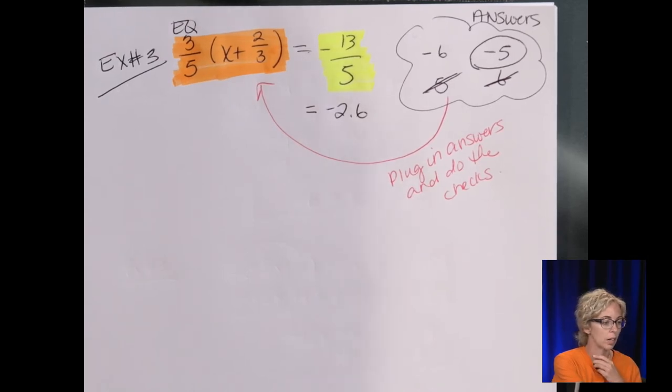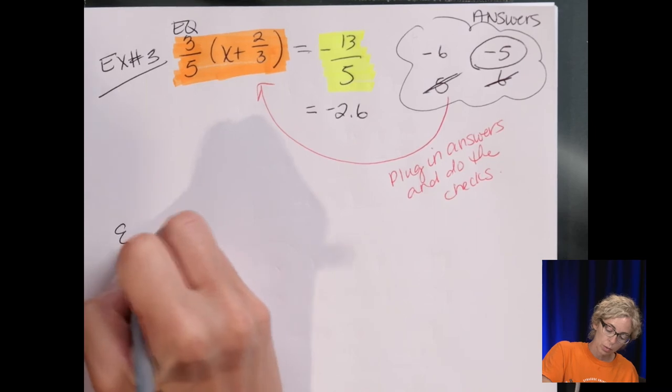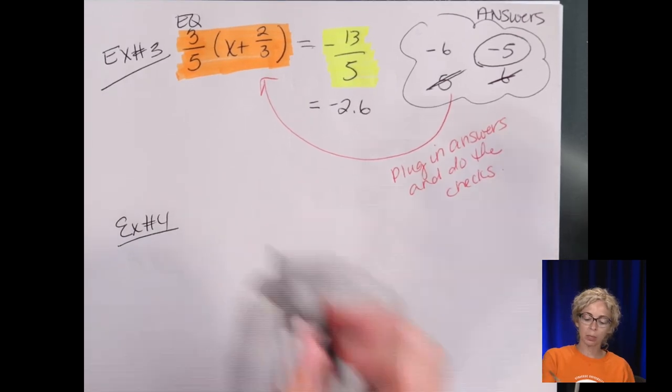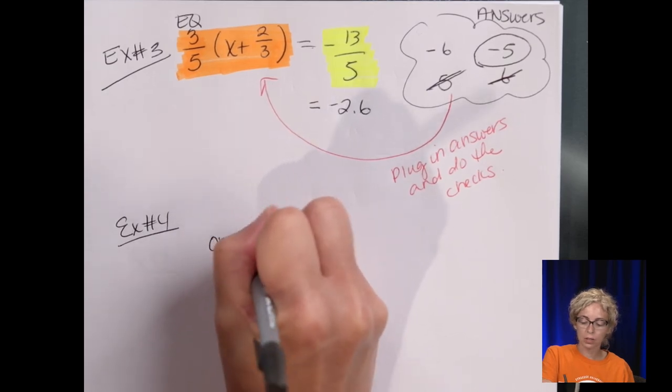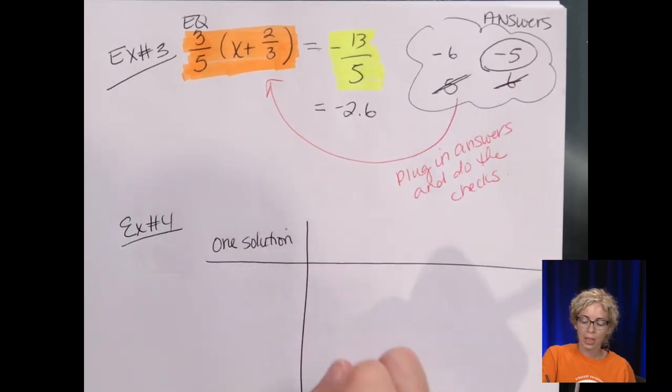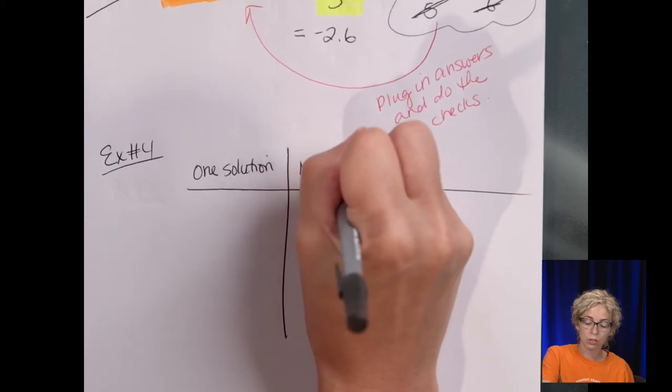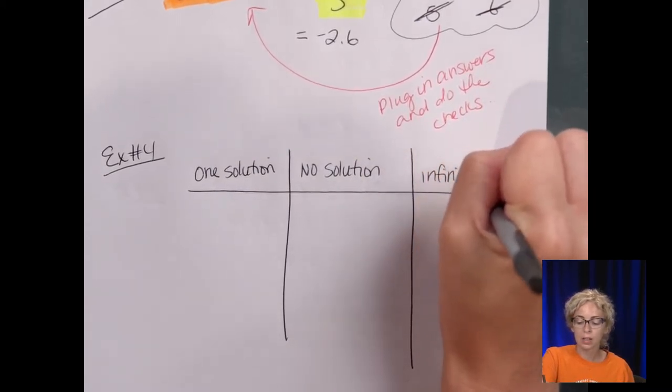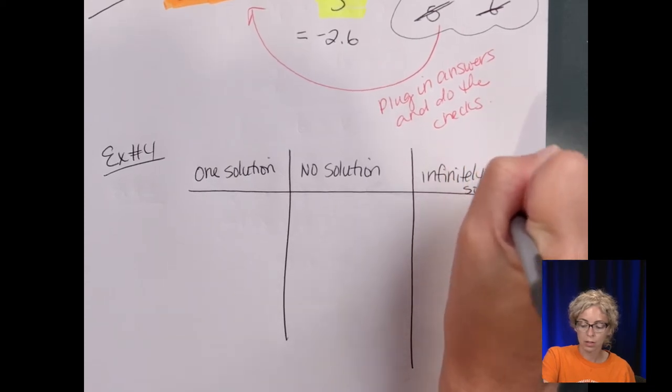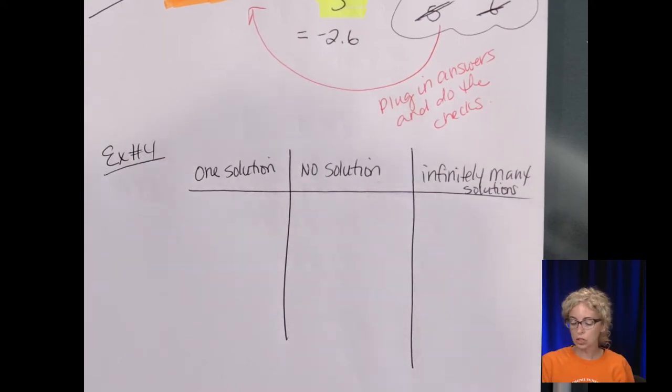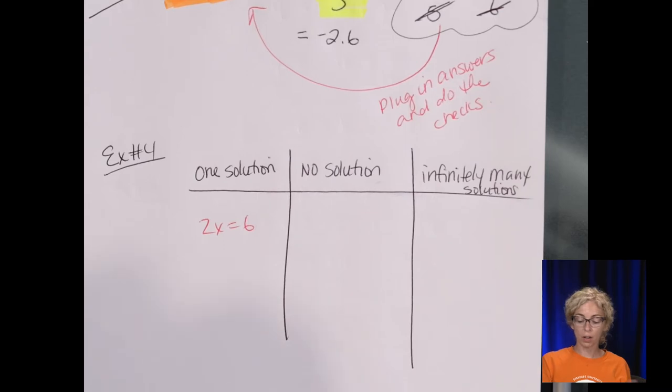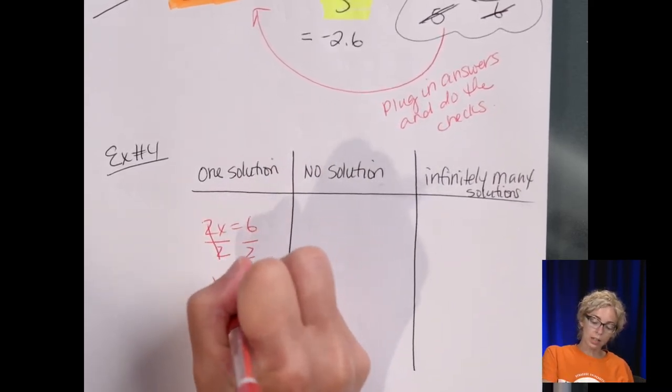So let's take a look at our next section. So when you're looking at equations, so example number 4. We're not going to essentially solve equations here. I'm going to give you examples where the equation has one solution. An equation like 2x = 6. That's an equation that has one solution because I can actually solve it. And when I do solve it by dividing by 2, we get x = 3. There's one solution.